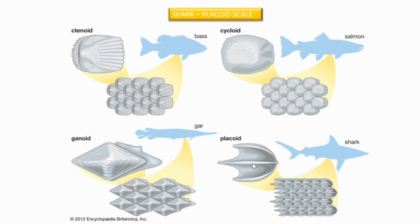The next type is ganoid, which has a distinctive shape. The placoid scale - which we are going to observe today - has three spine portions: one central and two lateral. The central one is called the median spine and the lateral ones are called lateral spines. Along with this, a basal plate will also be present, which you can see while performing the practical.